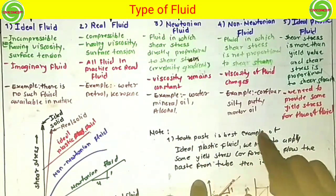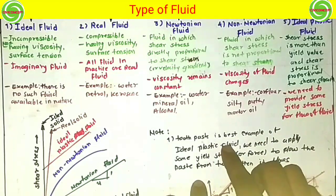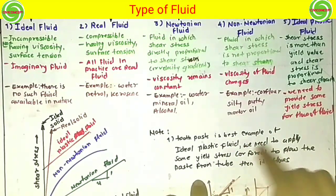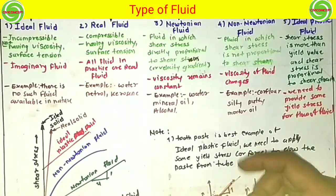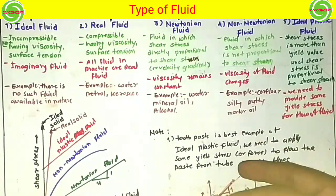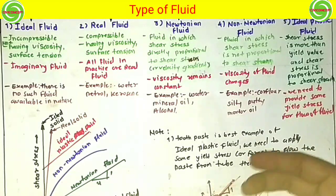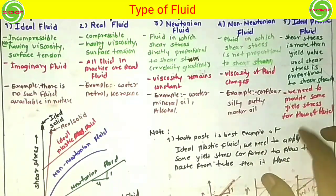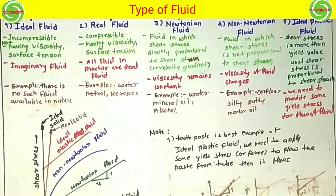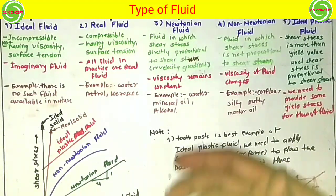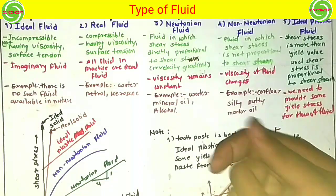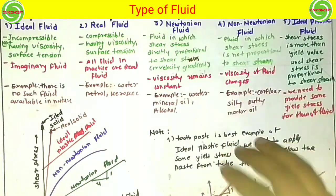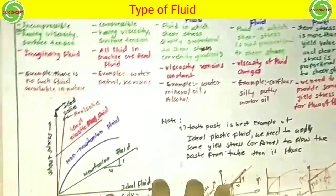Toothpaste is the basic example of an ideal plastic fluid. We need to apply some force for the flow of toothpaste — then it will flow. We have to apply yield stress for the flow of toothpaste.